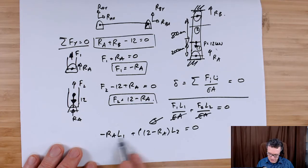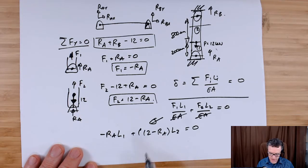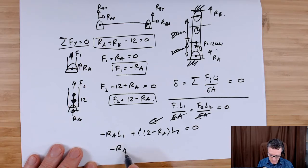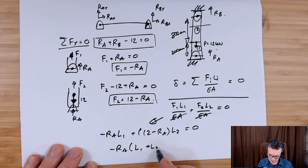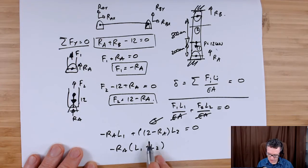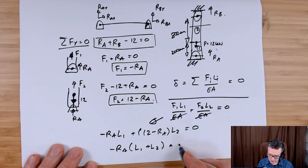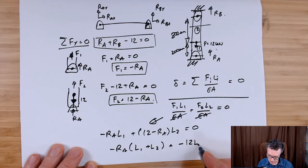So what shall we do next? I can see, let's bring the Ra terms together because that's what we're going to look for. So we've got minus Ra L1, and here I've got minus, so that'd be plus L2. That's the total length. And on the other side, take this on the other side, becomes minus 12 times L2.